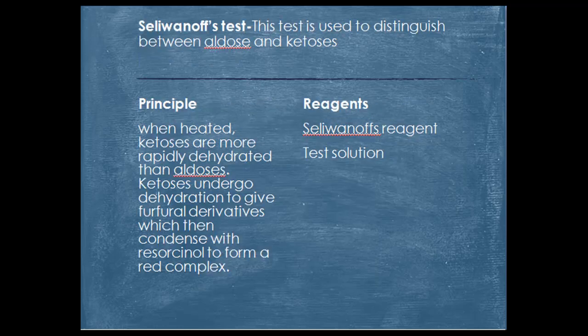Another test is the Seliwanoff test, which is used to distinguish between aldose and ketose sugars. When heated, ketoses are more rapidly dehydrated than aldoses. Ketoses undergo dehydration to give furfural derivatives, which then condense with resorcinol to form a red color complex.